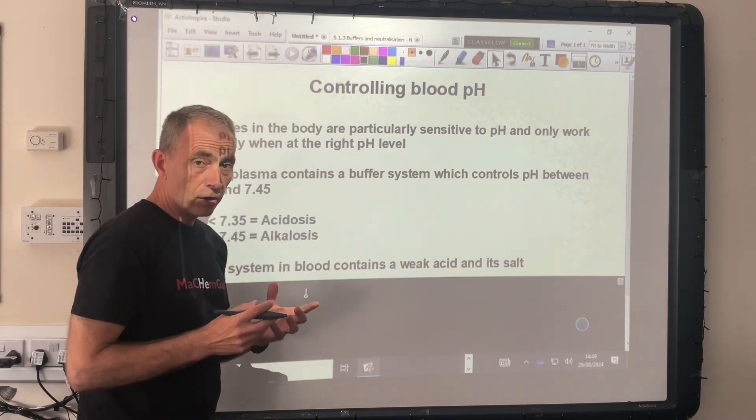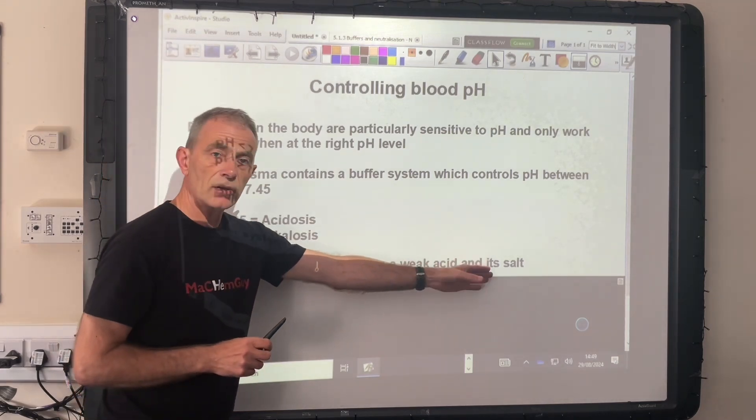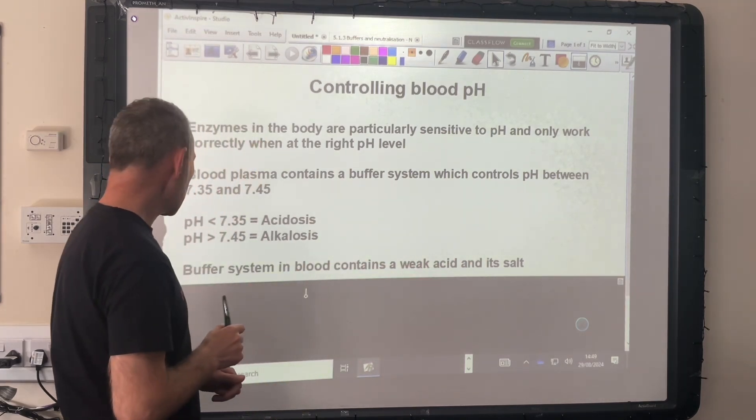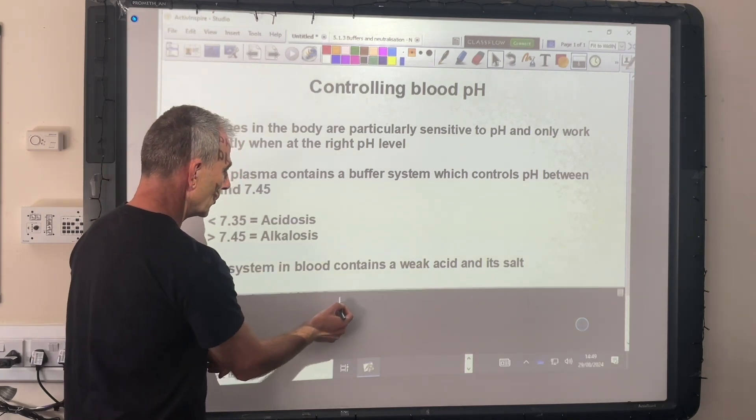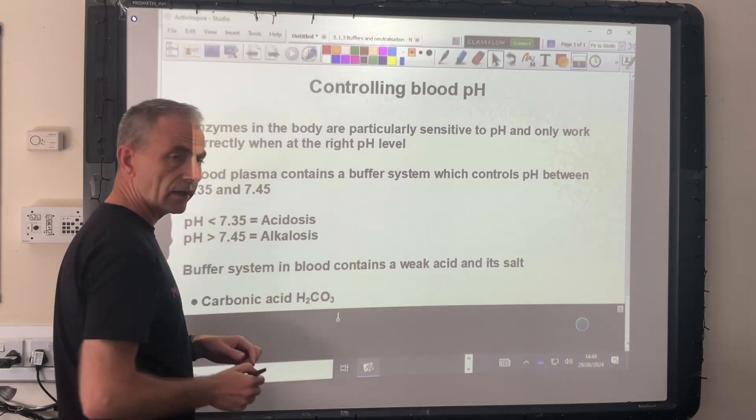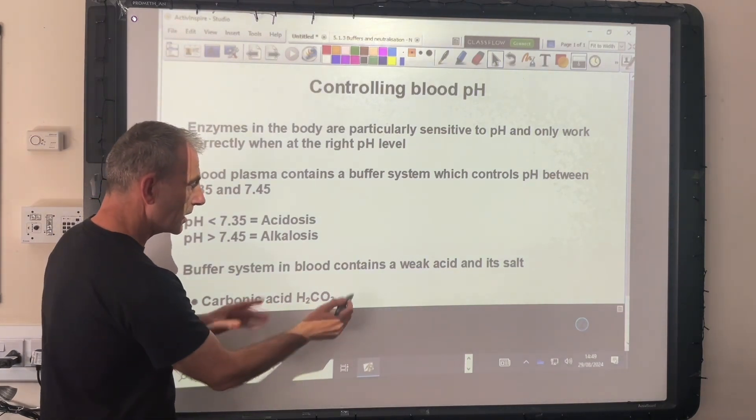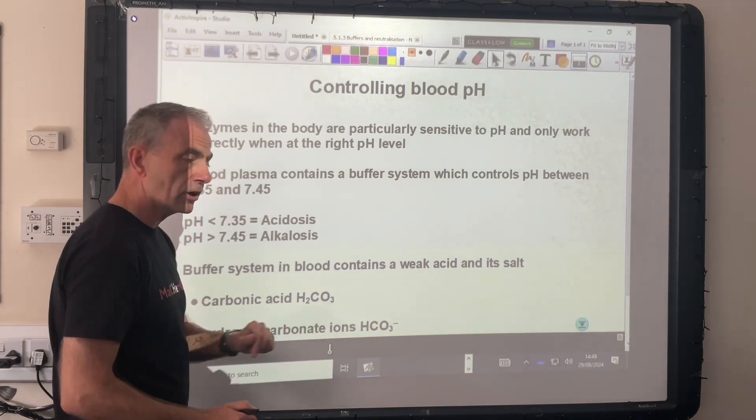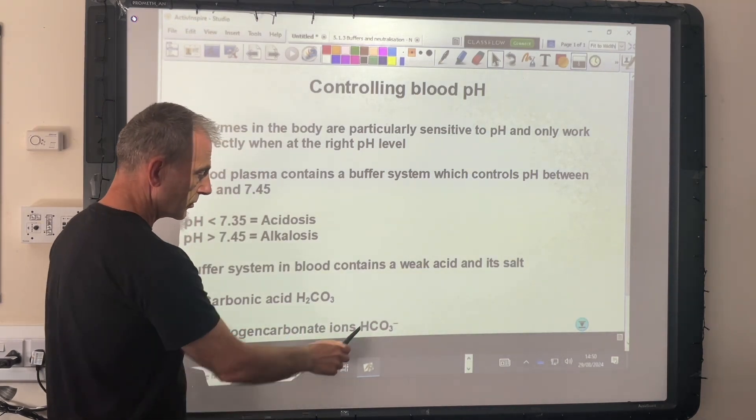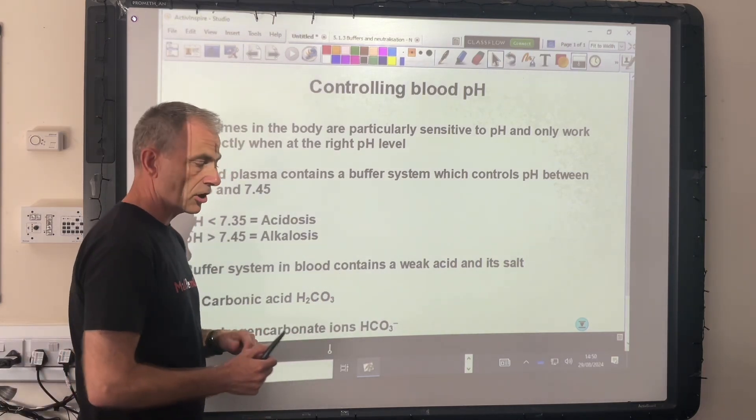Like all acidic buffer solutions, we need a weak acid and the salt of the weak acid. The buffer system in your blood is no different. The weak acid is carbonic acid, H2CO3, and the salt contains the hydrogen carbonate ion, HCO3 with a 1 minus charge.